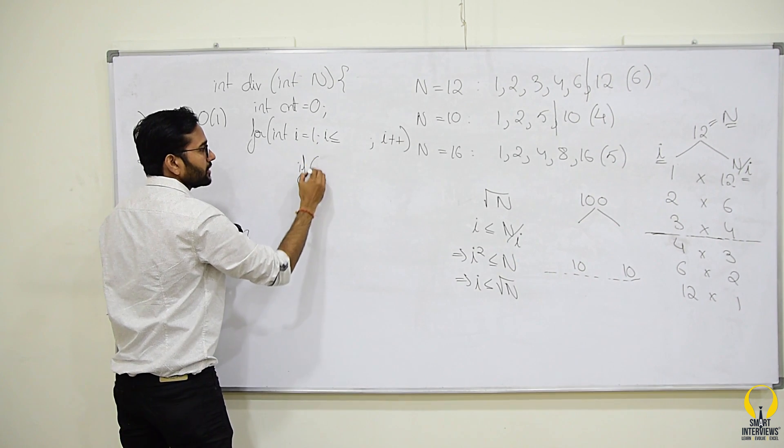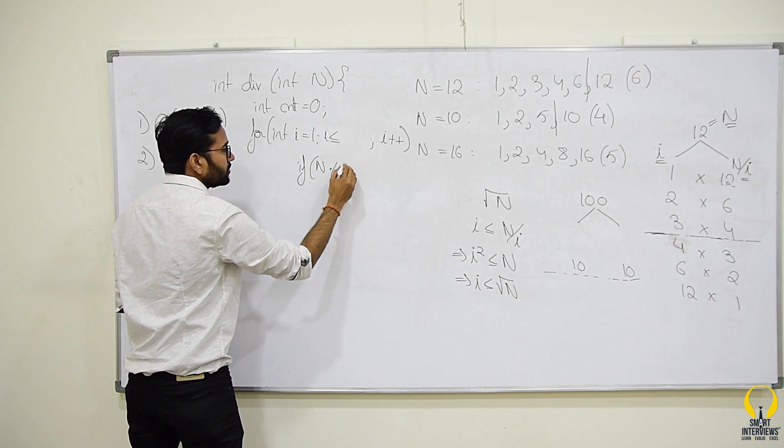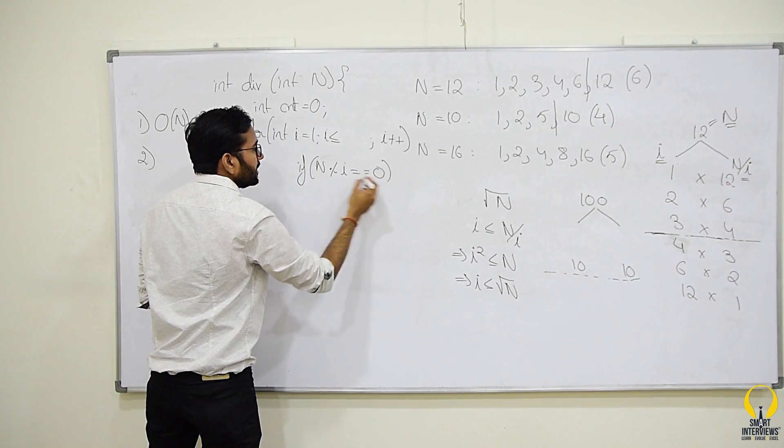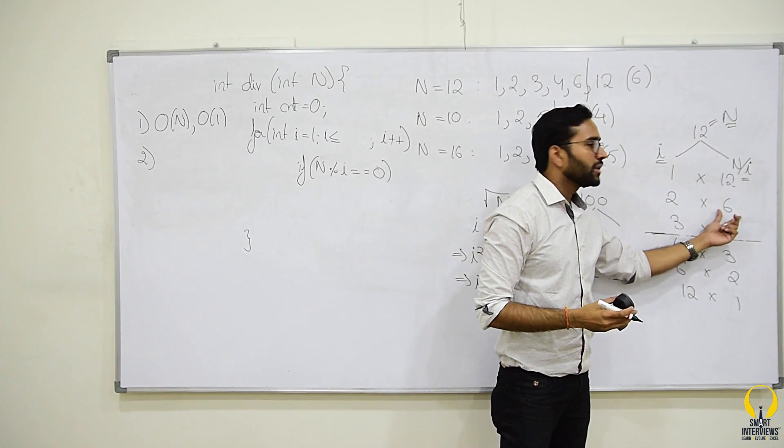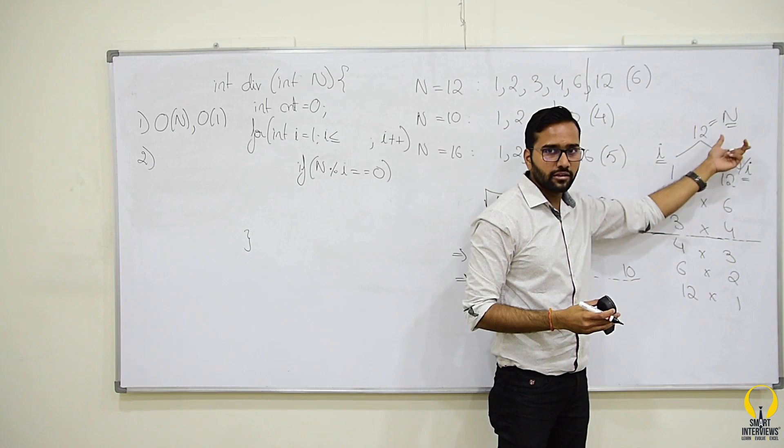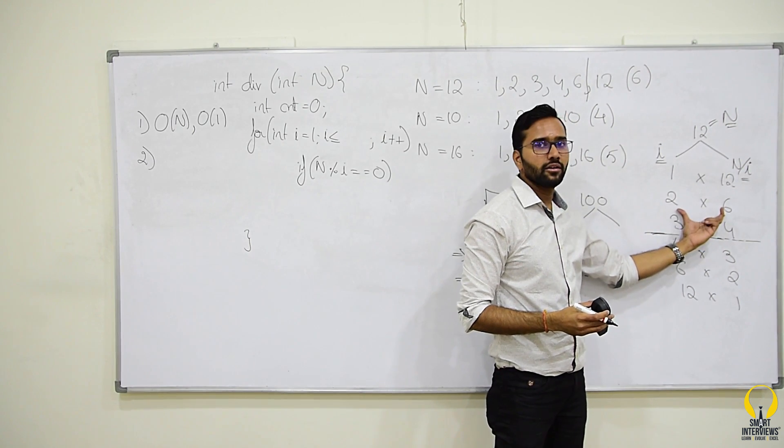Within that, if n mod i is 0, if i is a divisor of n, n/i is also divisor n. So, we should increment the count by 2.